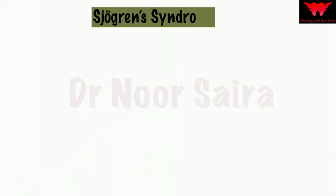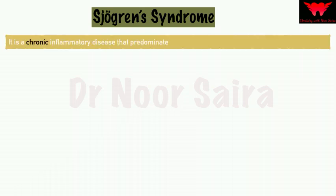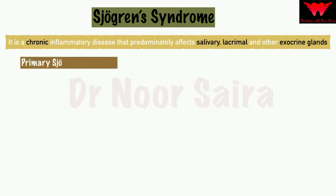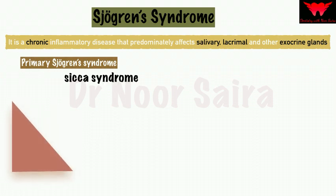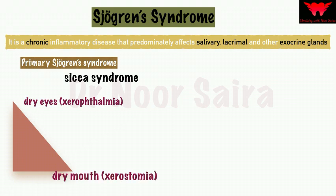Let's begin with Sjögren's syndrome. Sjögren's syndrome is a chronic inflammatory disease that predominantly affects the salivary glands, the lacrimal glands, and other exocrine glands. There are two types. The first is the primary type, also called Sicca syndrome, which has two major features: dry eyes, also called xerophthalmia, and dry mouth, or xerostomia.